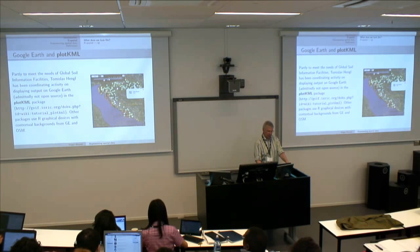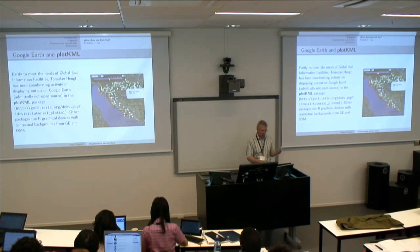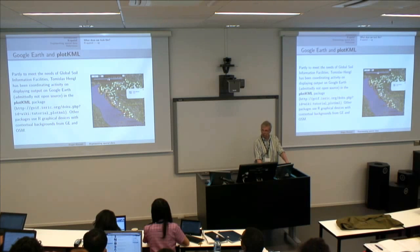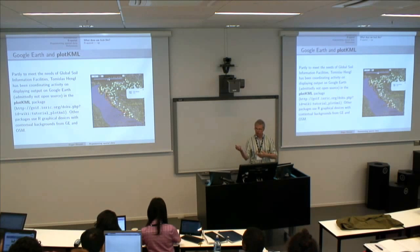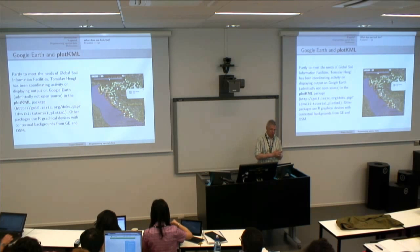Another example is the use of Google Earth — Tom's work with many contributors — using facilities in the API on Google Earth to allow you to display data which has previously been handled in R. You can use contextual backgrounds from Google Earth, Google Maps, OpenStreetMaps, and so on. There are lots of ways of putting a contextual background behind your spatial objects or spatiotemporal objects.